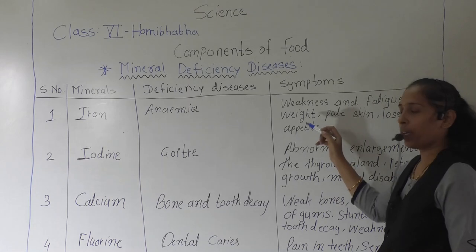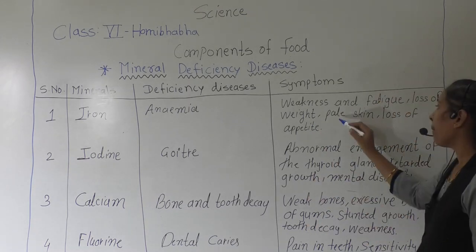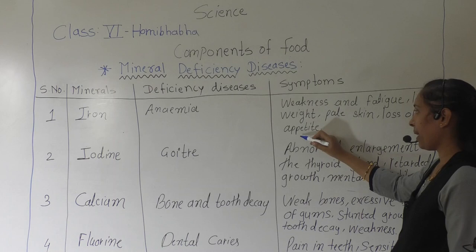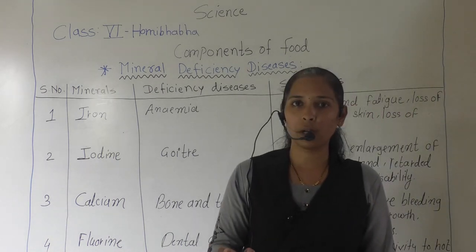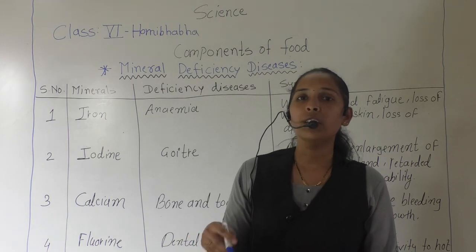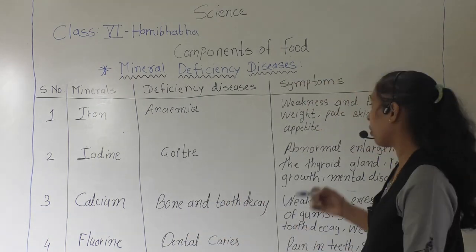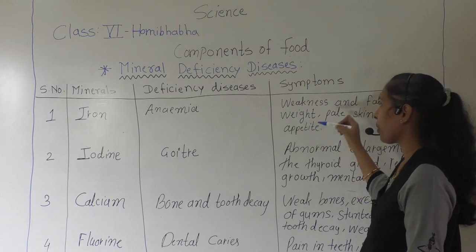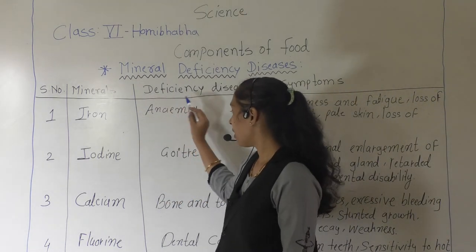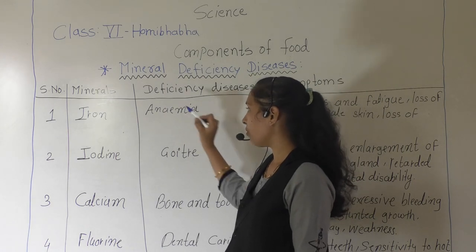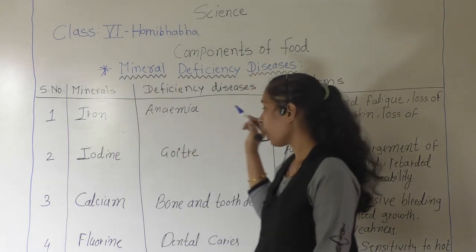Next is loss of weight — your weight decreases. And loss of appetite: appetite means hungryness, you are not feeling hungry at all, every time you are feeling weakness. So these are certain symptoms for the deficiency disease anemia, which is caused by lack of iron.